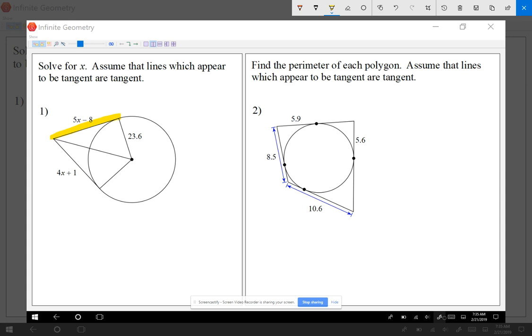Have the one tangent is 5x minus 8. I have the other tangent is 4x plus 1. I'm going to let them equal each other. 5x minus 8 equals 4x plus 1. I'll give you guys information about the radius, but we don't need the radius. I just need the tangents.